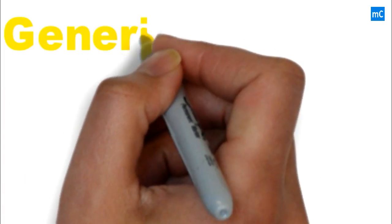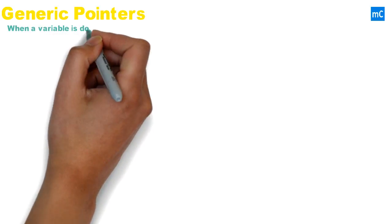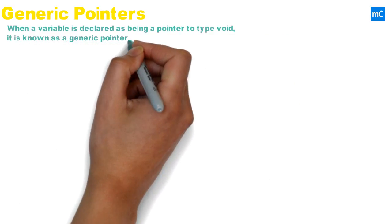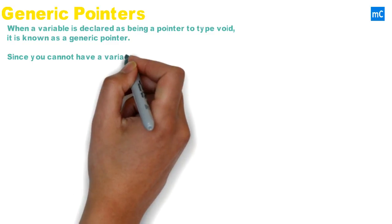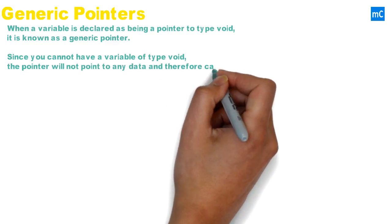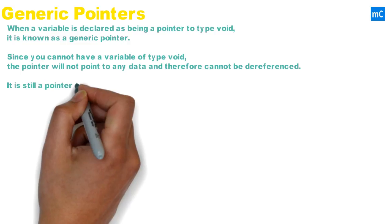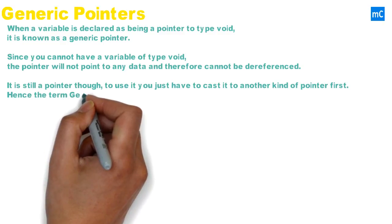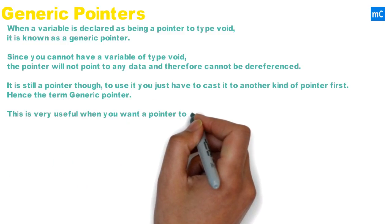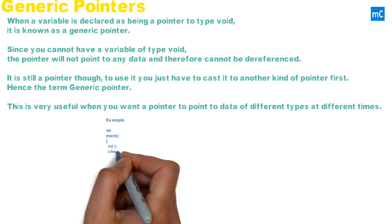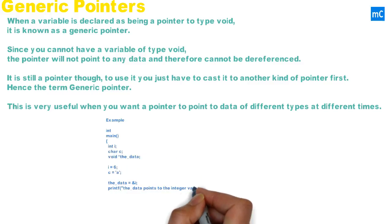Next we will move to generic pointers. When a variable is declared as being of type void, it is known as a generic pointer. Since you cannot have a variable of type void, the pointer will not point to any data and therefore cannot be dereferenced directly. To use it you just have to cast it to another kind of pointer. This is very useful when you want a pointer to point to data of different types.